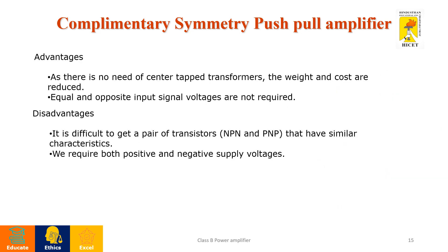The main advantage of the complementary symmetry push-pull amplifier is that there is no need for center-tap transformers, so weight and cost are greatly reduced, and there is no need for equal and opposite input signal voltages. However, it has certain disadvantages: it is difficult to get a pair of transistors with similar characteristics, and it is difficult to obtain proper positive and negative supply voltages. Thank you.